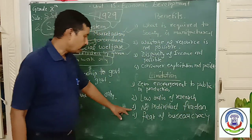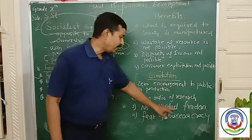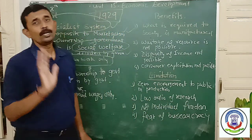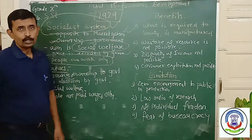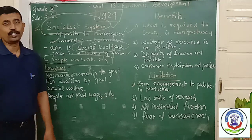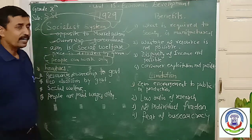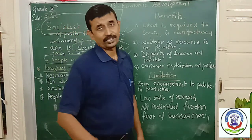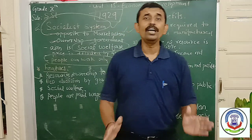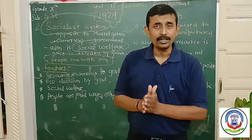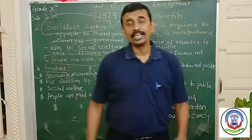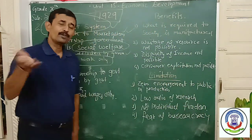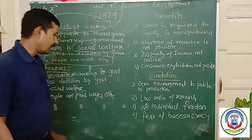Third limitation: no individual freedom. The greatest limitation of socialistic economy is that freedom is not given to the private sector or to the people. They cannot start an industry — they can work only as labor.